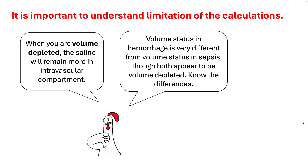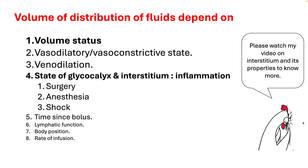Let's understand some of the limitations of this presentation. Most importantly, knowing the volume of distribution and the factors that affect it. The numbers used are standard but can differ under different conditions. Volume of distribution of any fluid will depend upon volume status, vasodilatory or vasoconstrictive state, venodilation, state of the glycocalyx and interstitium — especially in inflammation — and can also change with surgery, anesthesia, and degree of shock. It also depends on time since bolus, lymphatic function, body position, and rate of infusion.